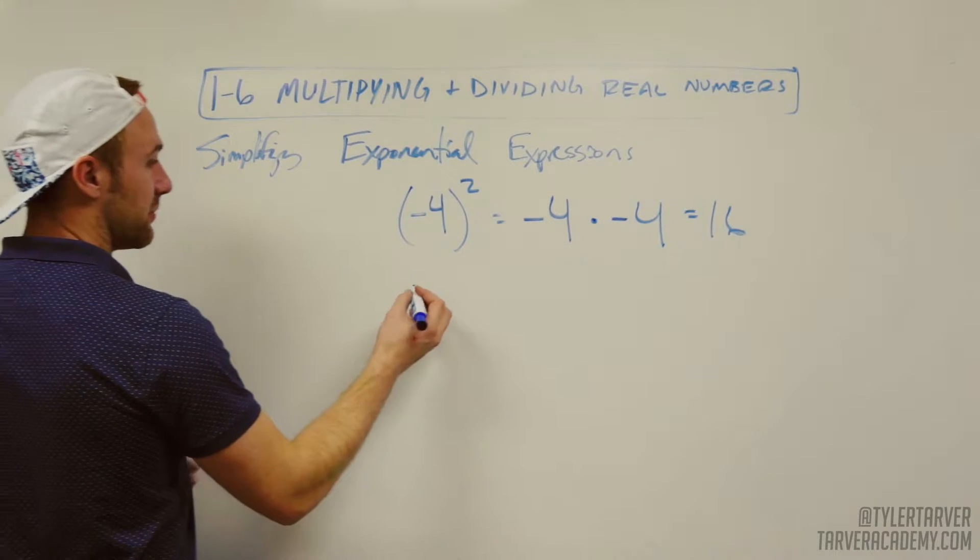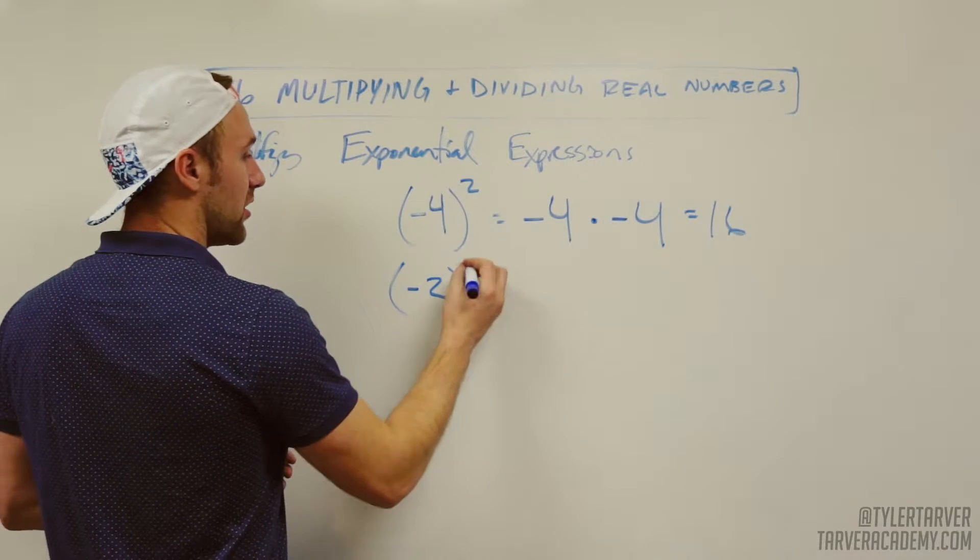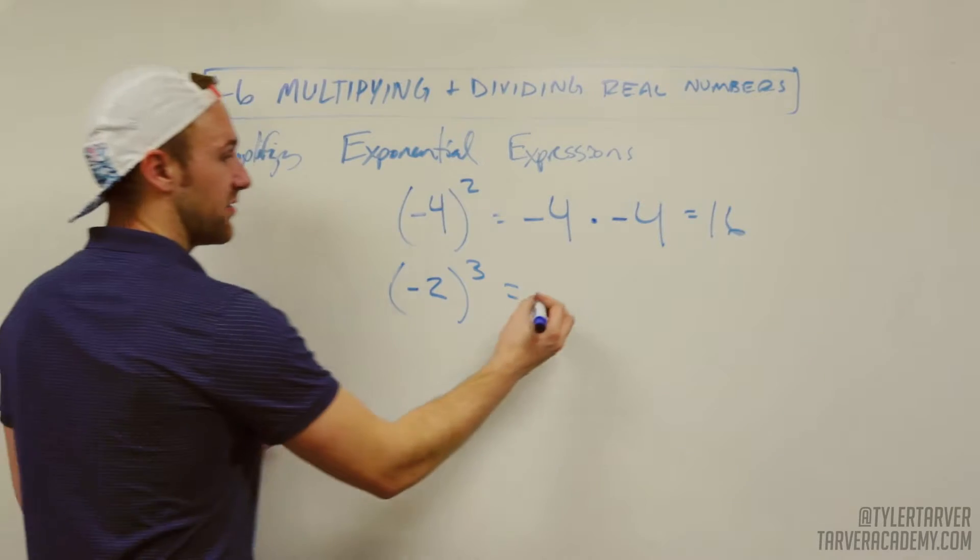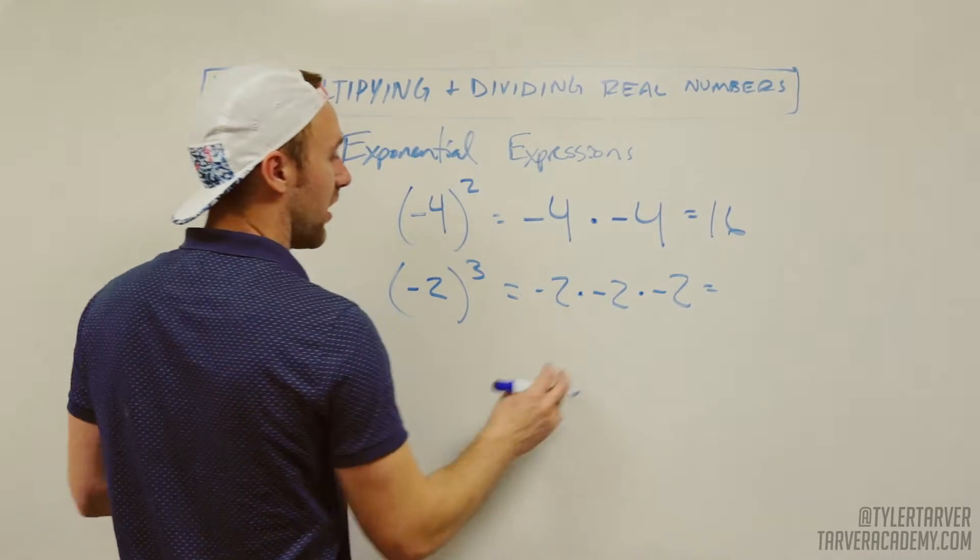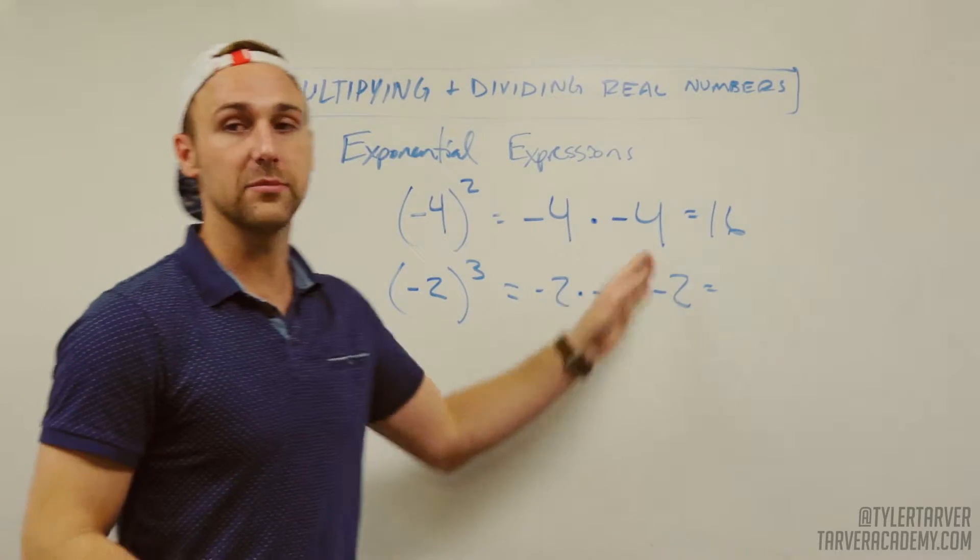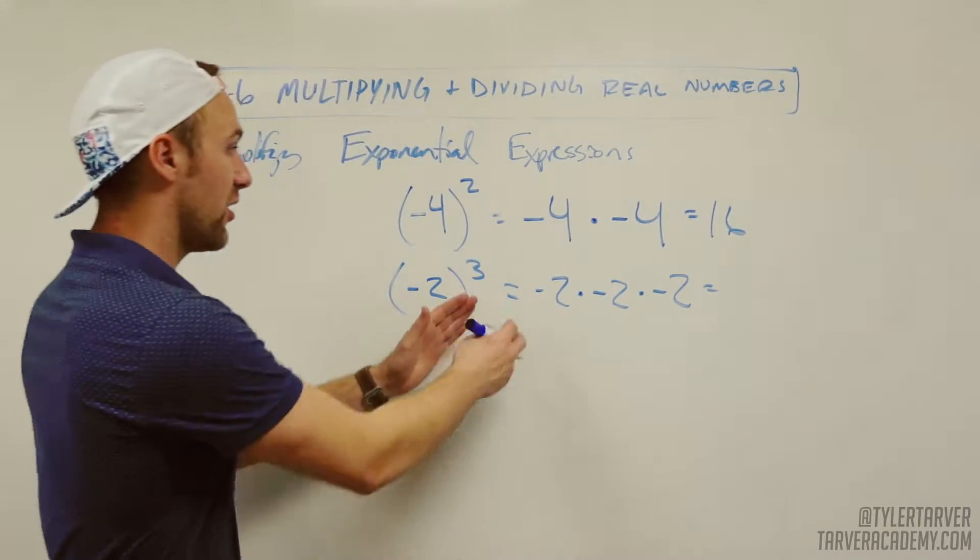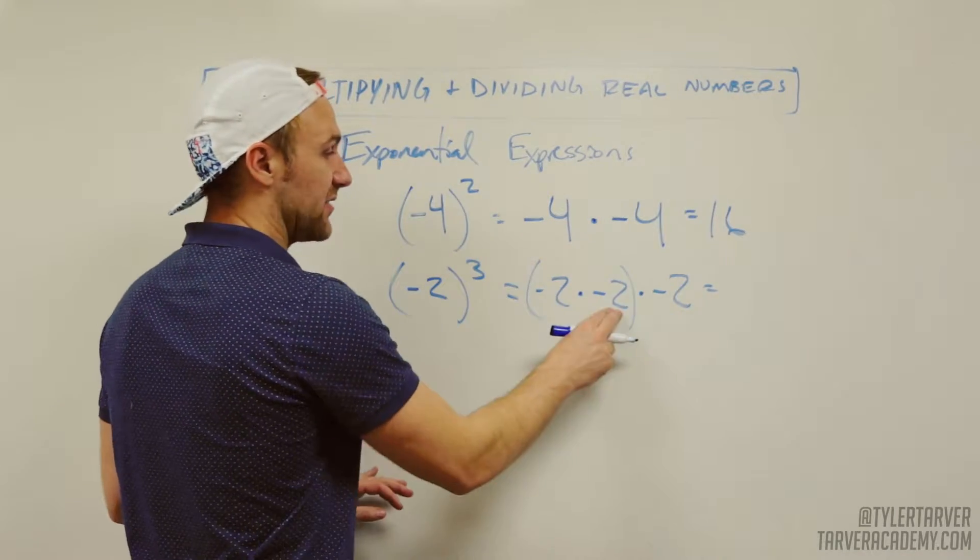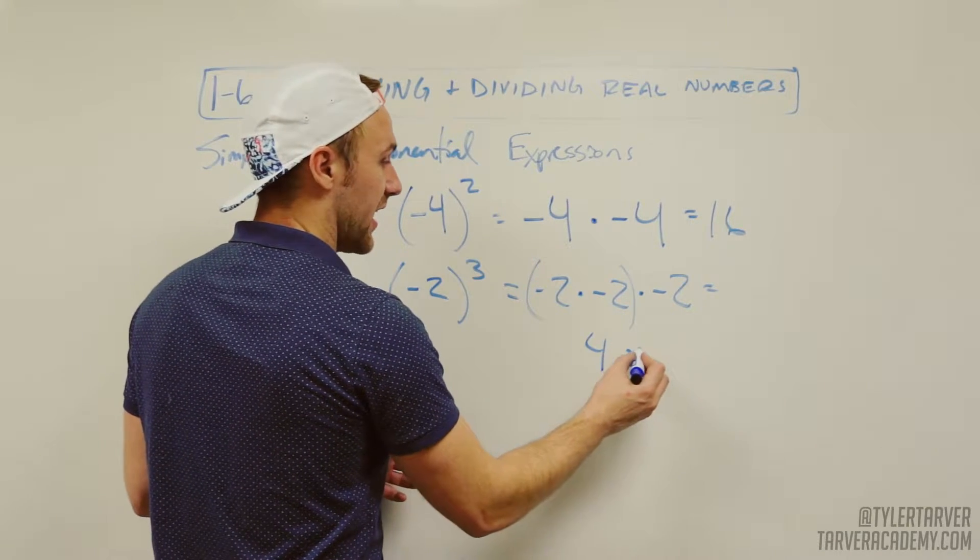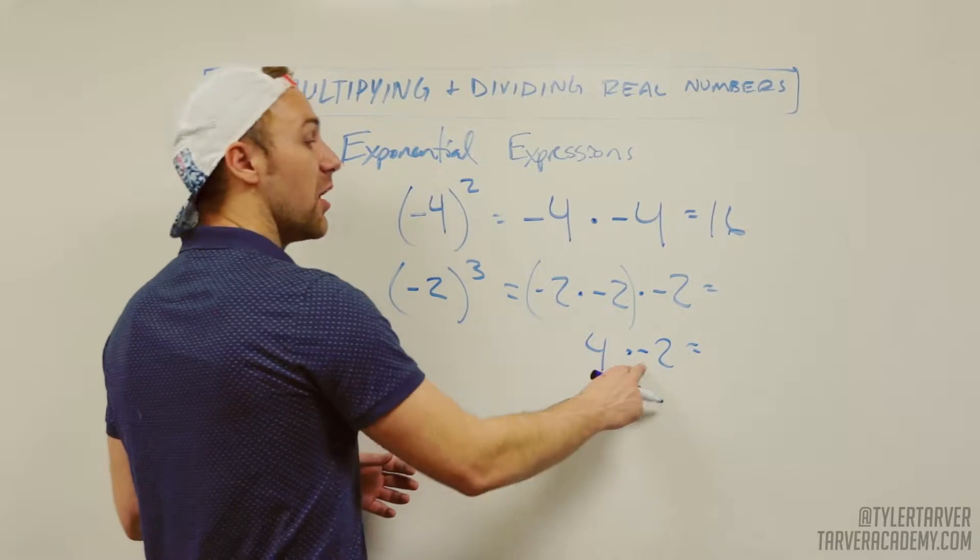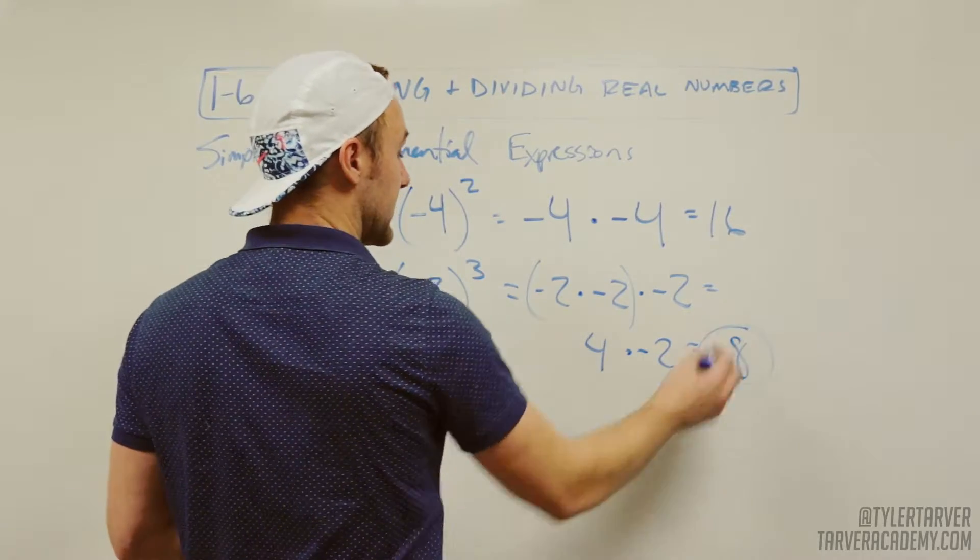Now let's look at one that wouldn't be quite as simple. Let's say we got negative two cubed. That's negative two times negative two times negative two. This one's a little different. Here, negative times a negative equals a positive. You're doing negative times a negative, does equal a positive, it's positive four. I'm bringing it down, that's times negative two, which equals a negative eight.